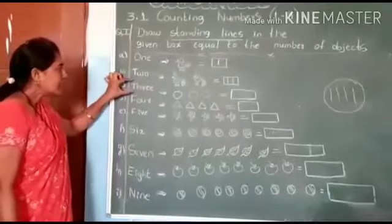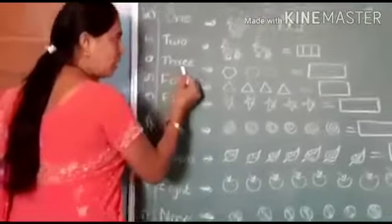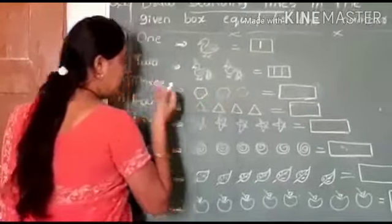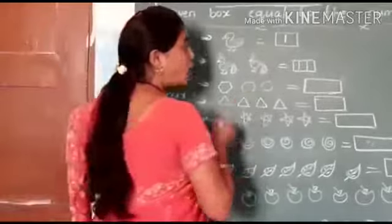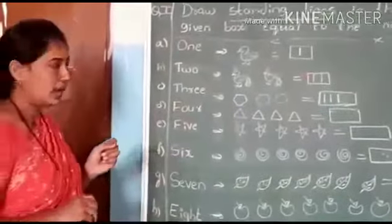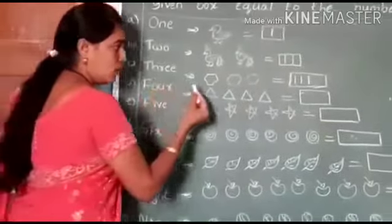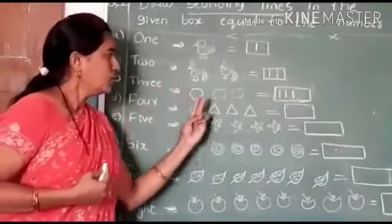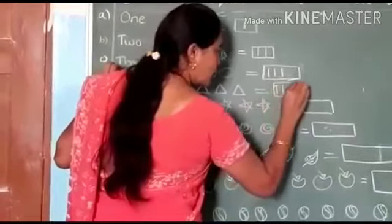Next, C — T-H-R-E-E, 3. The number is three, and objects are there: one, two, three. Number is three and objects also equal to three, so we should draw three standing lines. Next, D — here you have four. Four triangle objects are there: one, two, three, four. So we should draw here four standing lines.